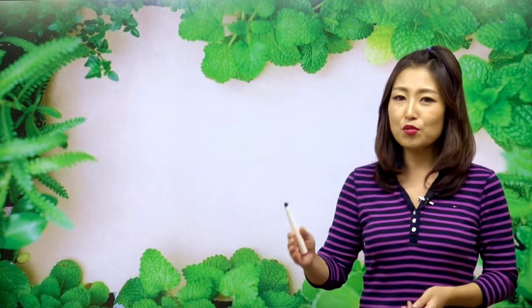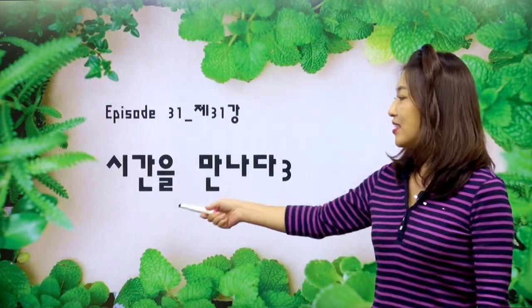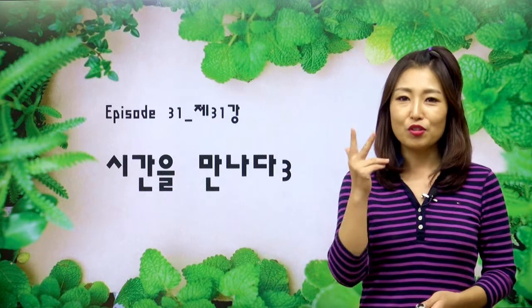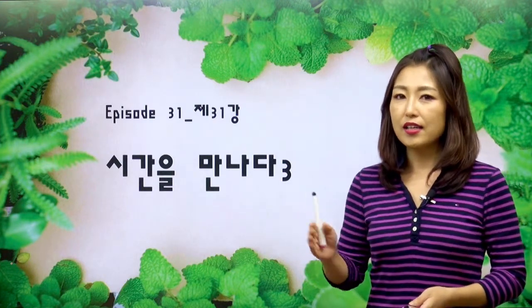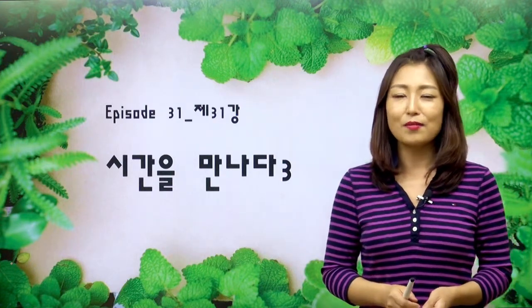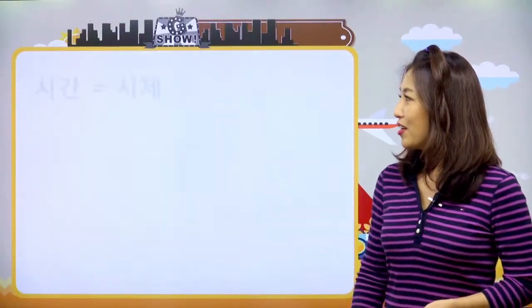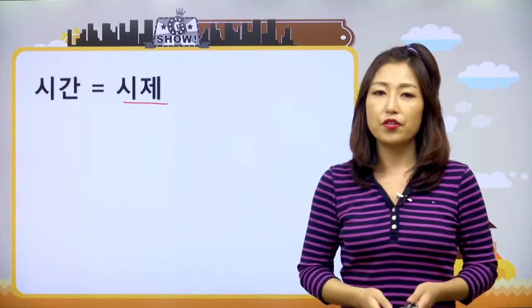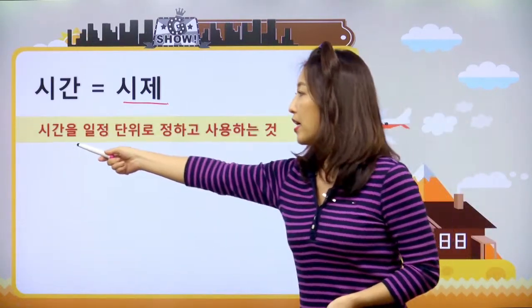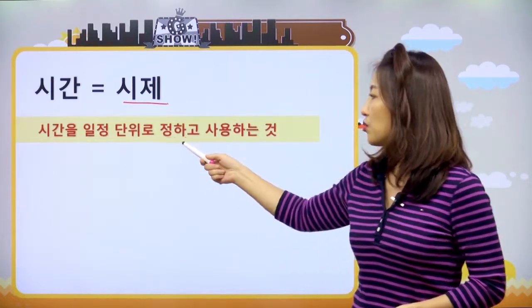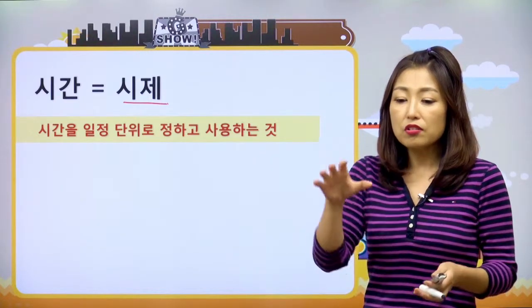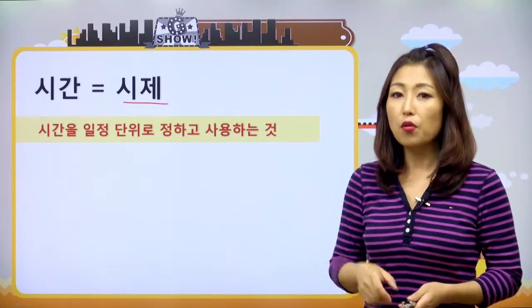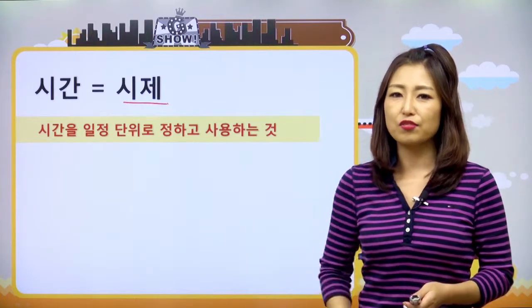오늘 선생님이랑 공부해 볼 내용은 우리 계속적으로 이야기하던 거예요. 시간을 만나다 No. 3이에요. 우리 이전 강의에 다른 시간들을 만났었죠? 이번에는 어떤 시간을 만날지 정말 기대되네요. 복습하는 의미로, 시간은 시제라고 한다고 했어요, 영어에서. 시제는 시간을 일정 단위로 정해서 사용하는 걸 말해요. 일정 단위로 나눴어요. 그리고 그거를 뭉뚱그려서 시제라고 부르는 거예요.